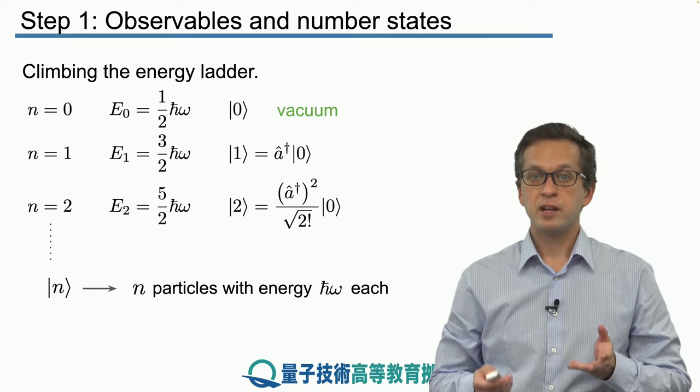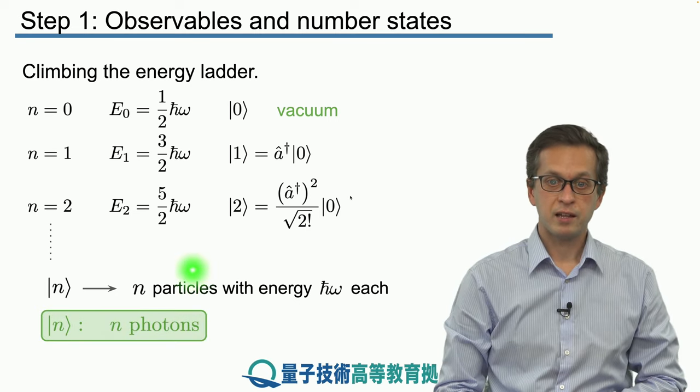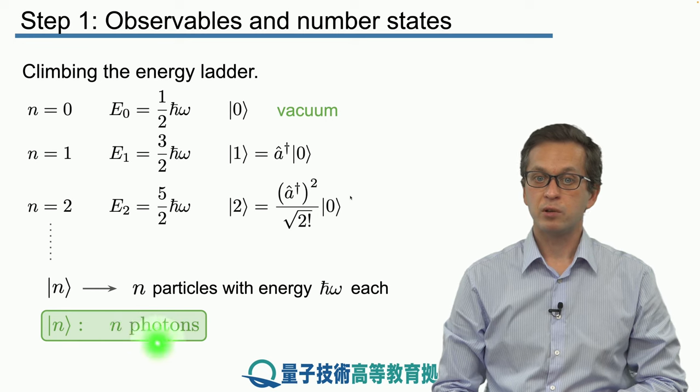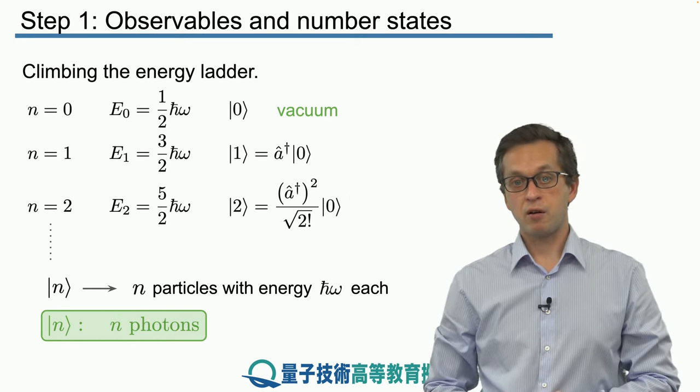In other words, we can interpret these particles as photons. A number state |n⟩ means we have n excitations or n photons in our field.